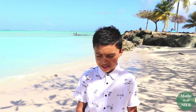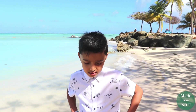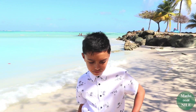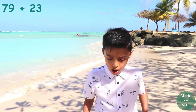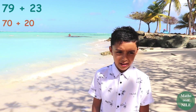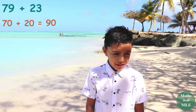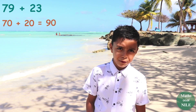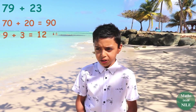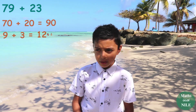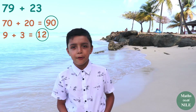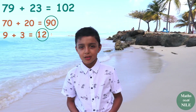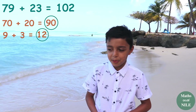So we're going to do another addition question, but it's going to be a bit trickier. Let's do 70 plus 20, which is 90. And then we do 9 plus 3, which is 12. So we do 90 plus 12, which is 102. Excellent. So the answer is 102.